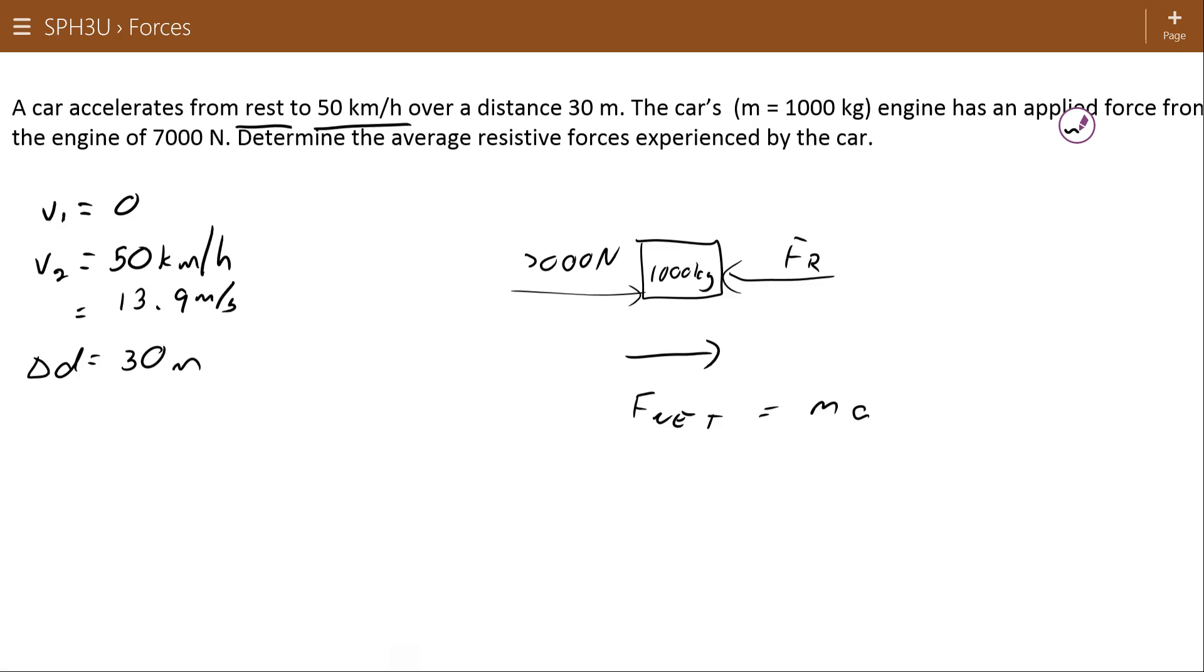So again, looking back at our five equations of motion, we can see that the appropriate equation here since we want acceleration is 2a times displacement equals v2 squared minus v1 squared.